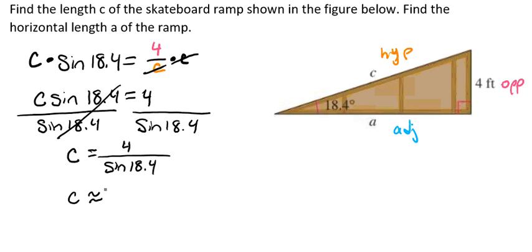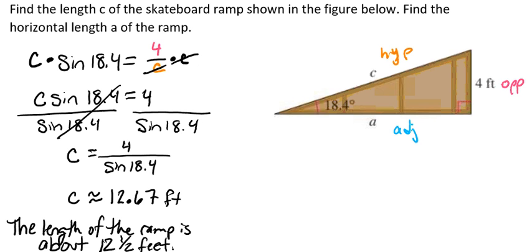Now that's our exact answer. If we plug it into our calculator, we'll get our approximate answer. And since we're talking about kind of a real life object, you don't want to tell somebody, oh yeah, I totally skated that skateboard ramp and it was 4 divided by sine of 18.4 feet long. That doesn't make any sense. So here we're going to get 12.67 feet. And so we might even say that the length of the ramp is about 12 and a half feet.